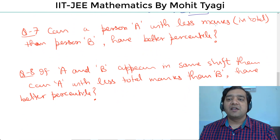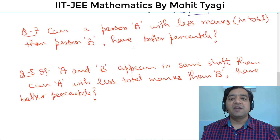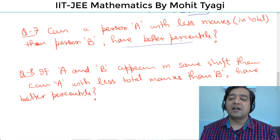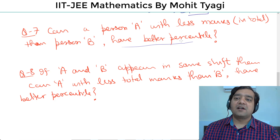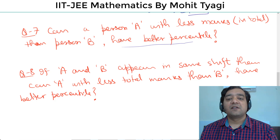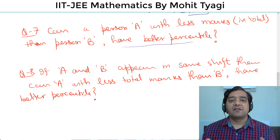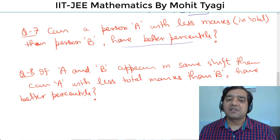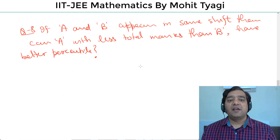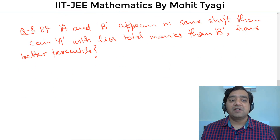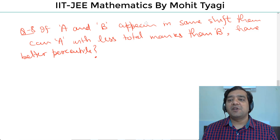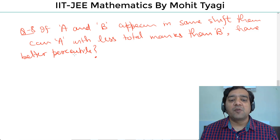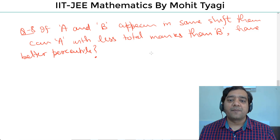Can a person A with less marks than person B have better percentile? Definitely yes — अगर दोनों अलग-अलग shifts में हैं। जिस shift में paper tough आया होगा उसमें सभी के less marks होंगे, तो ऐसा हो सकता है कि उसका better percentile हो जाए। And the final question for this video — if A and B appear in the same shift, then can A with less total marks than B have better percentile? यह नहीं हो सकता।